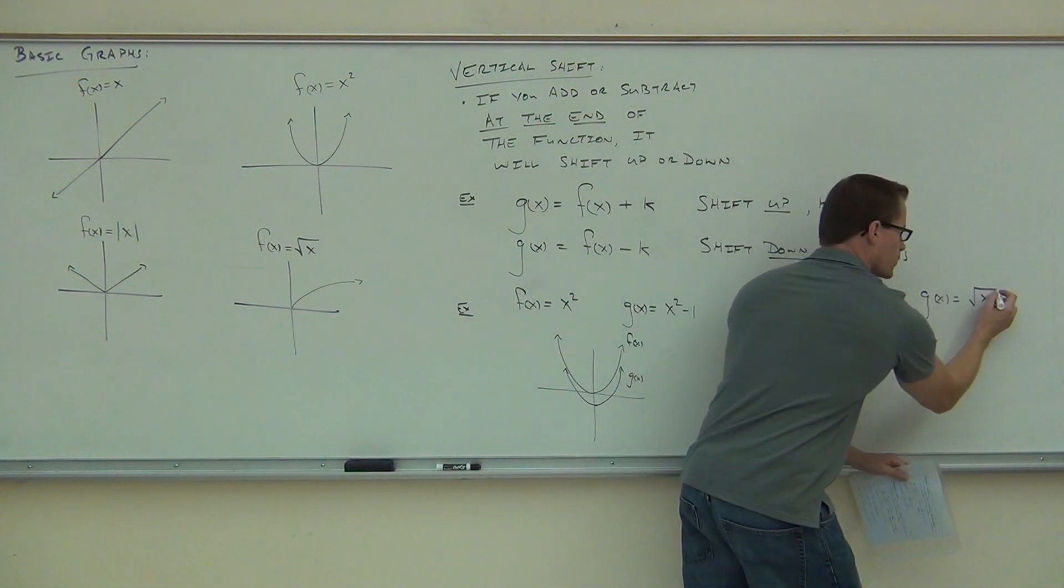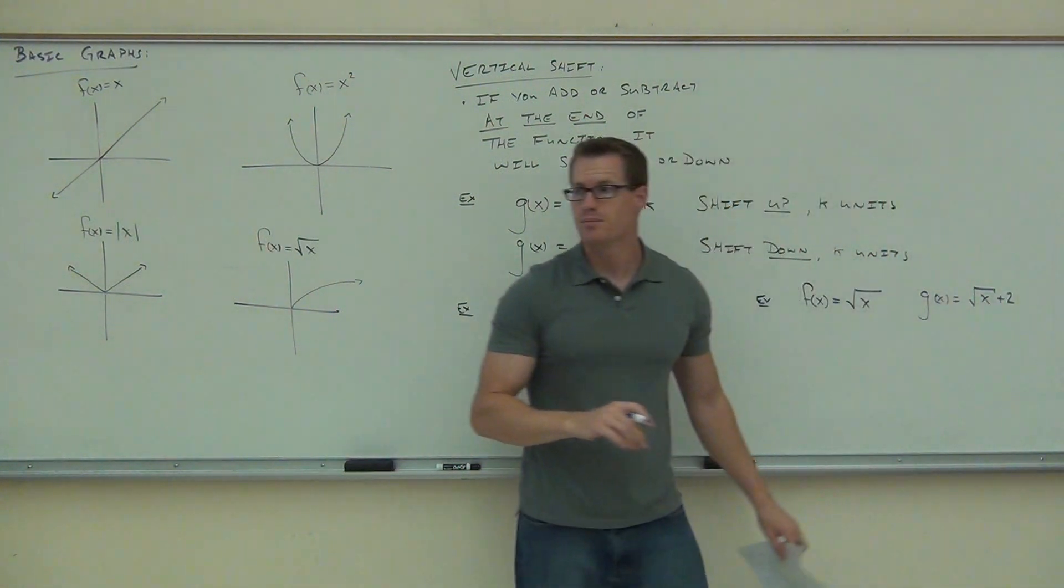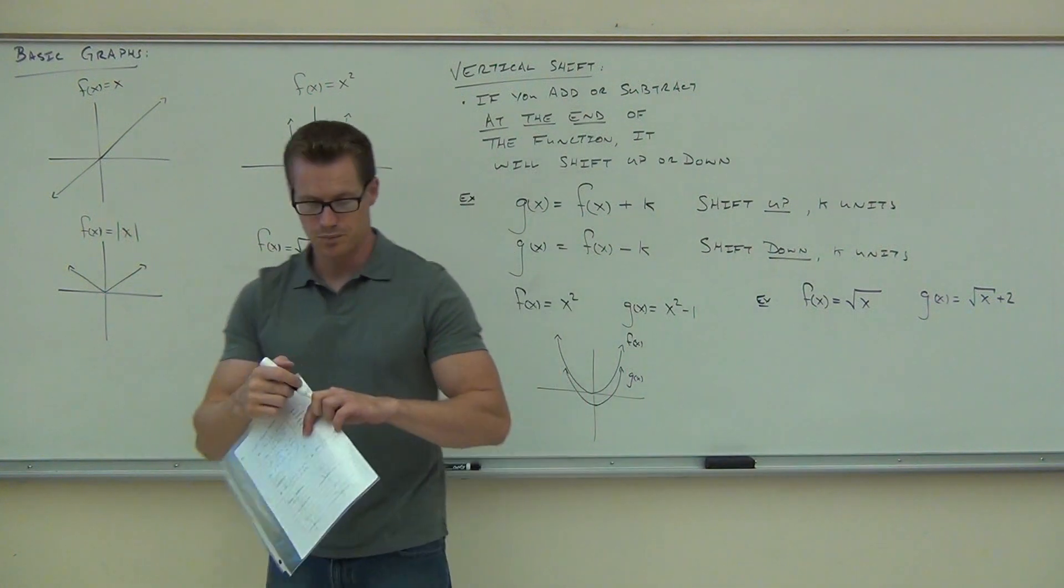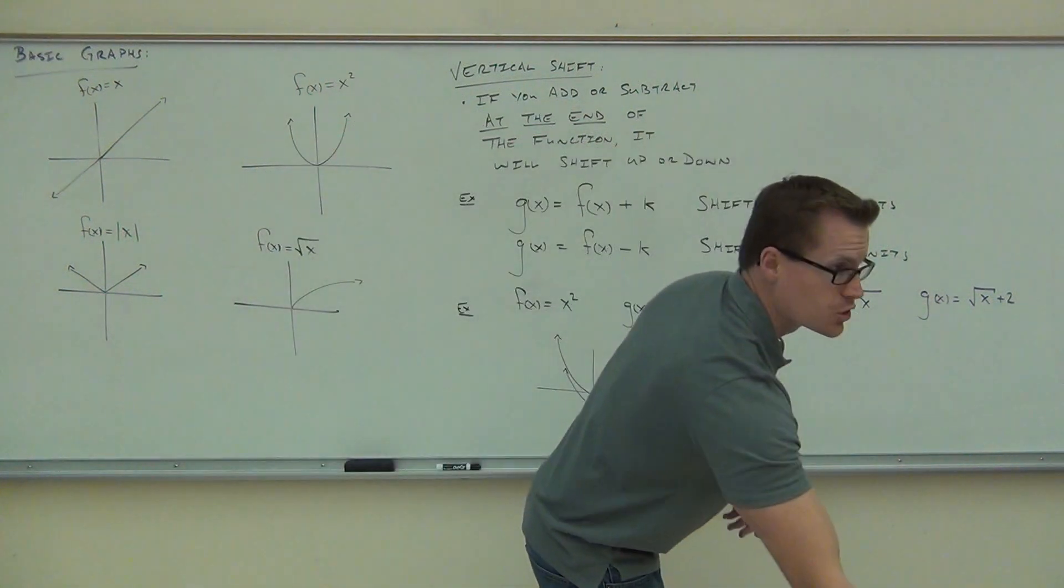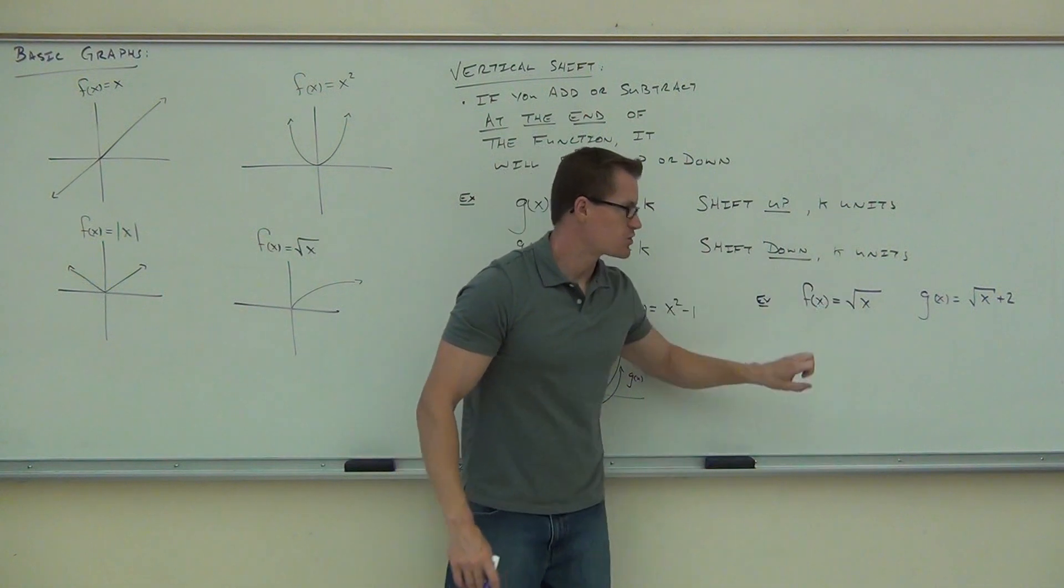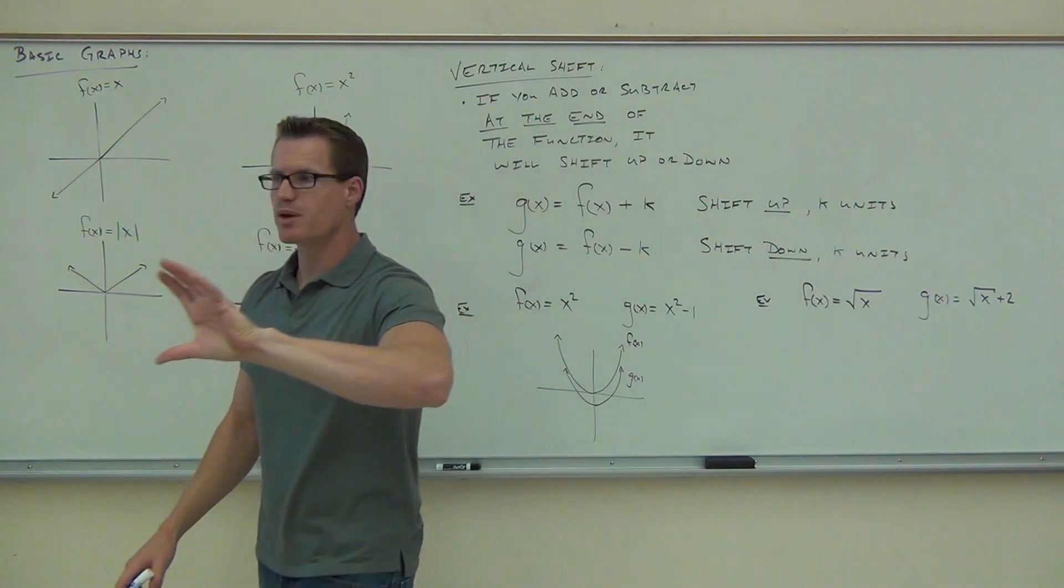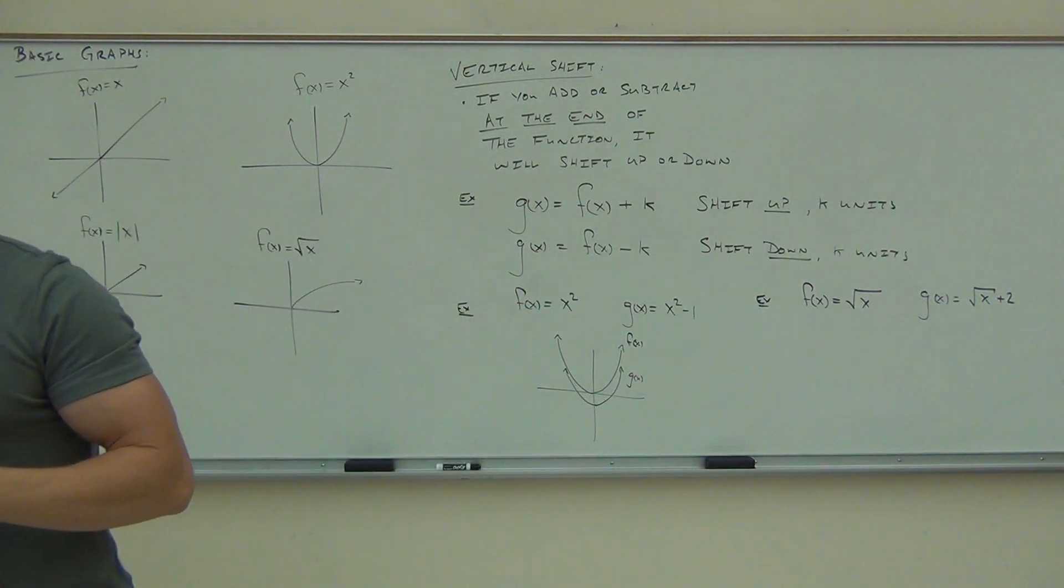I want you to make sure the square root does not go over the two, okay? Make sure it does not go over the two. So draw your original, your basic graph shape, and then tell me and show me what happens when I add two to the end of it, okay? Do that on your paper.